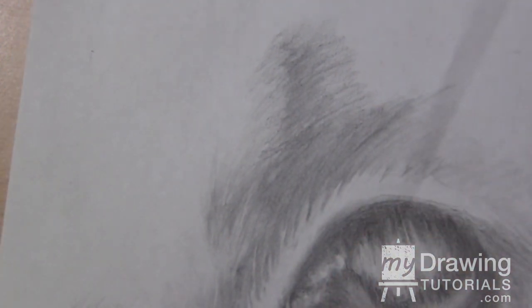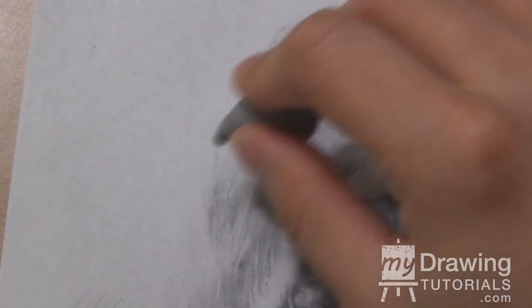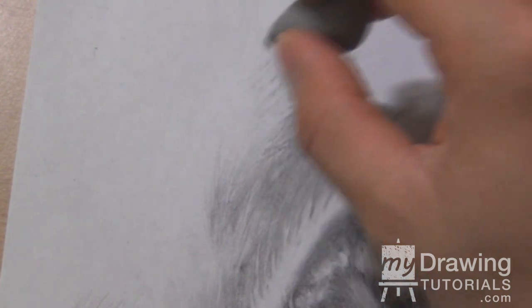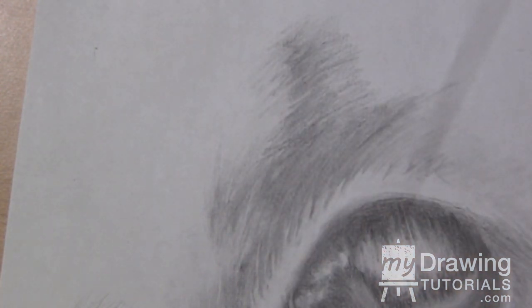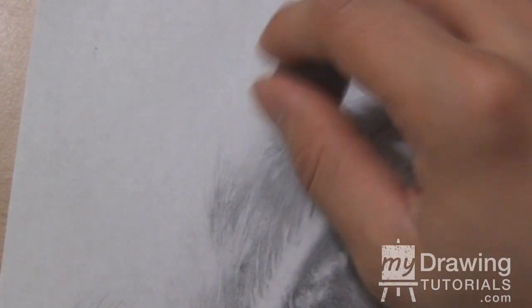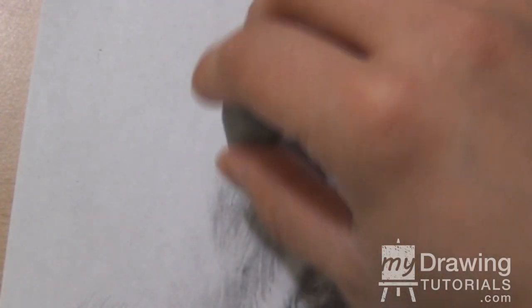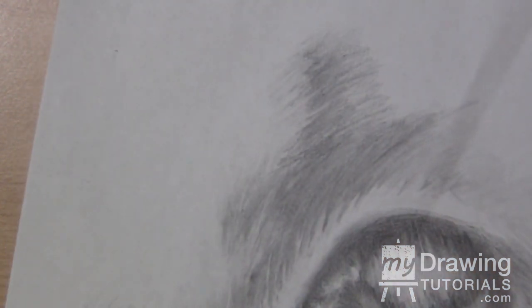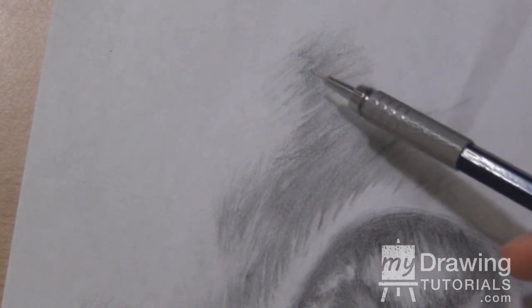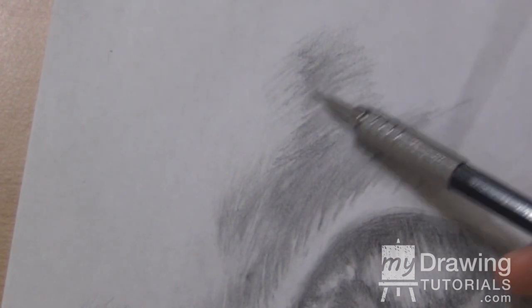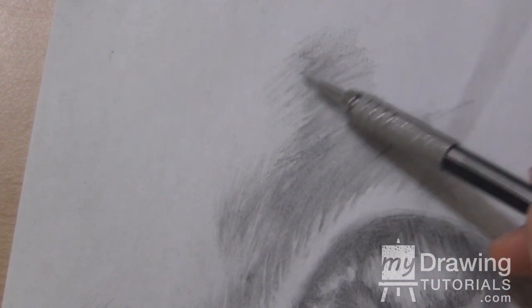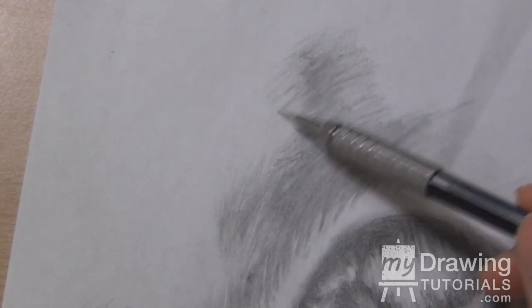Now that we have that layer put in I'm going to take my eraser again and add in the little stripes. You can see that's giving us a nice fur effect there and then I'll take my mechanical pencil and accent some of the stripes.